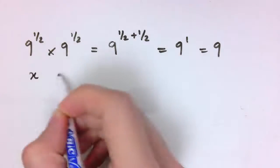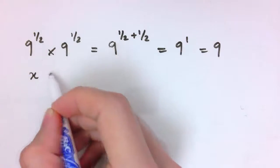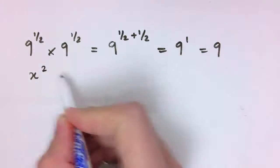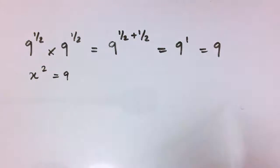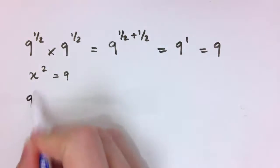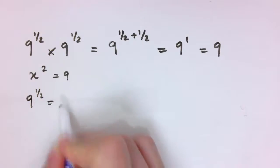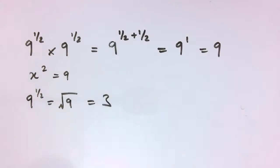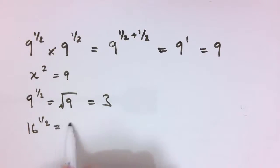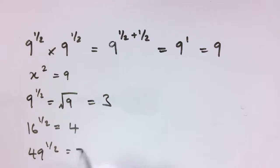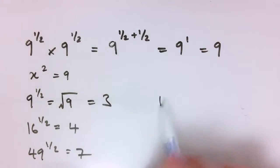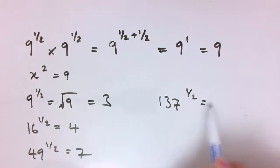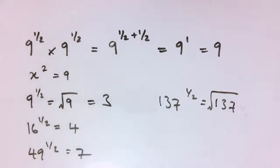So if 9 to the 1 half is x, I've got x times x, which is x squared, and that equals 9. So it's quite reasonable to say that we'll define 9 to the 1 half as the square root of 9, which is 3. So if I wanted 16 to the 1 half, that would be 4. If I wanted 49 to the 1 half, that would be 7. And 137 to the 1 half would be the square root of 137.